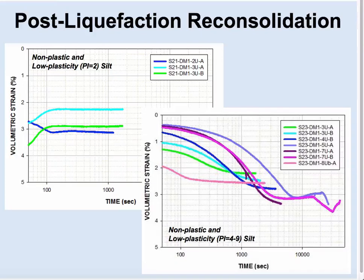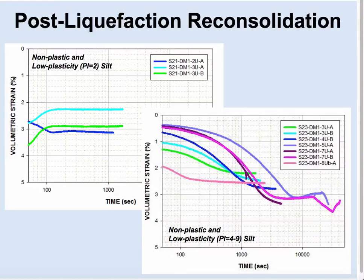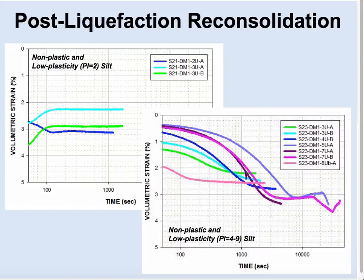Another interesting finding from the cyclic triaxial testing program was observed differences in the post-liquefaction reconsolidation response. For non-plastic and low-plasticity silts on the order of PI 2, post-liquefaction reconsolidation shows near-immediate reaching of final volumetric strain. As we get up to PIs of around 4 to 9, we begin seeing a time-dependent reconsolidation response. This has direct implications for in-situ field response, as well as the potential for hydraulic connectivity and ejecta formation, which has implications for settlement and field observation.